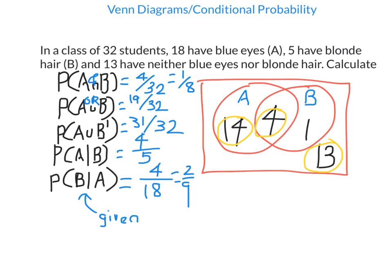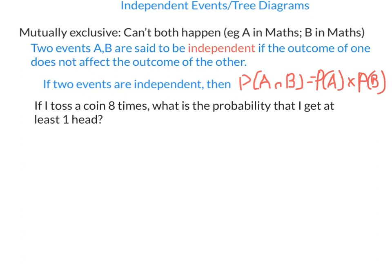Let's look at independent events. People often confuse these with mutually exclusive events, which cannot both happen at the same time — for example, you can't get both an A and a B in maths this semester. Independence is entirely different: two events A and B are independent if the outcome of one does not affect the outcome of the other. For example, tossing a coin and rolling a die — what happens on the coin doesn't affect the die. If two events are independent, then P(A and B) = P(A) × P(B).